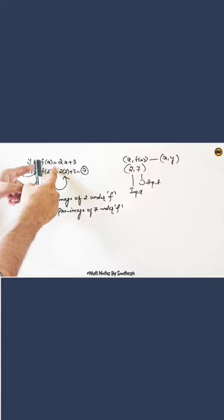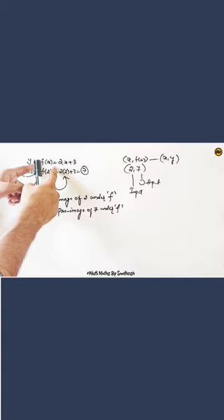This ordered pair satisfies this relation. Now we have to show the image of 2 under f1. Now we have to show the first element of pre-image of 7 under f.